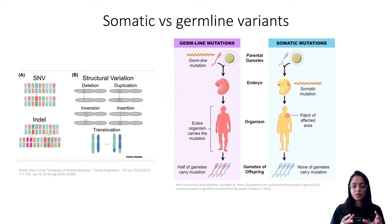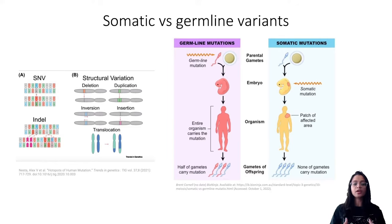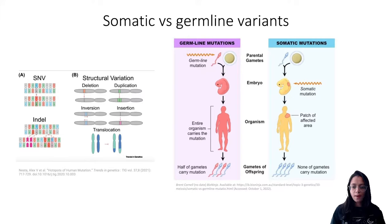To distinguish whether a mutation is germline or somatic, one has to sequence the tumor sample along with a matched normal. For example, for an individual with lung cancer, along with the tumor biopsy from the lung, one also needs a matched normal from blood. Somatic variants are typically more involved in disease and are of special interest. Without a matched normal, one cannot distinguish whether a variant is germline or somatic, since every genome contains tens of thousands of mutations.